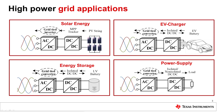The grid tie converter is a bidirectional three-phase power factor corrected AC to DC converter. This allows the converter to take power from the grid or supply power back to the grid. Power factor correction is required to minimize the AC RMS current and limit the current harmonic distortion. The grid tie converter is a very flexible building block for many grid tie power supply applications.